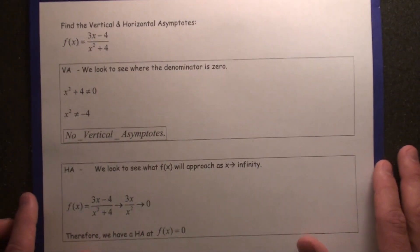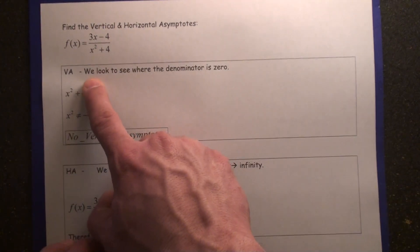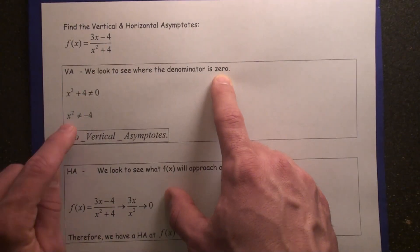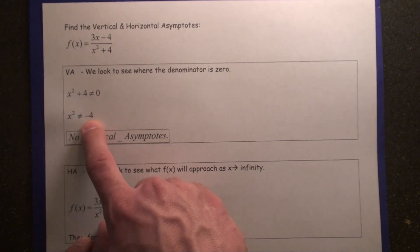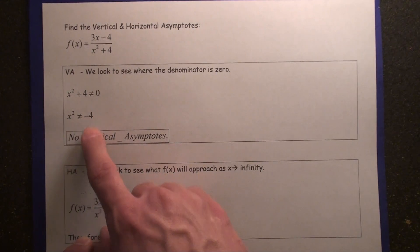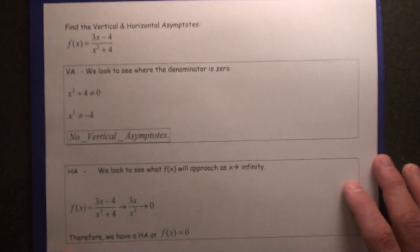Finding vertical and horizontal asymptotes for f of x here. Let's take a look. Vertical asymptotes, we look to see where the denominator is 0. Well, x squared plus 4 equals 0. That's not going to happen. x squared will not be a negative number for real numbers. Therefore, f of x has no vertical asymptotes.